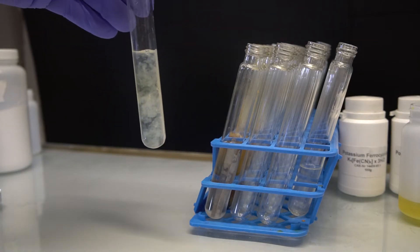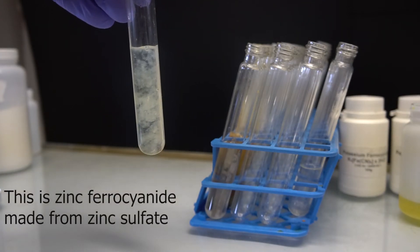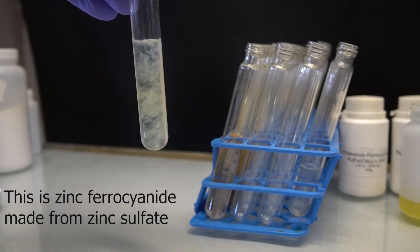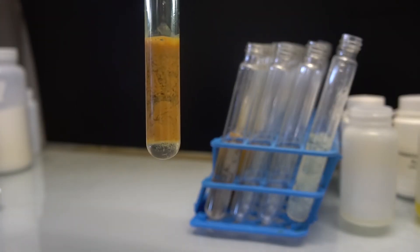Zinc ferrocyanide was off-white due to impurities in the zinc. Here you can see the zinc ferrocyanide in the test tube. Zinc ferricyanide was orangish-brown.